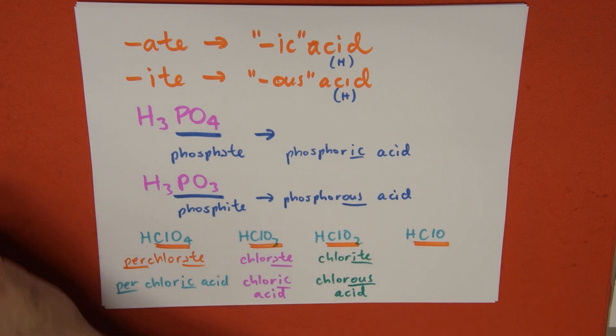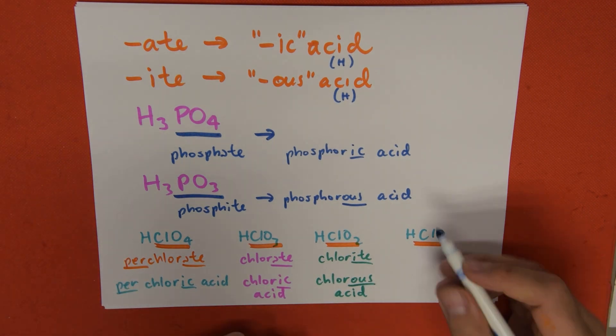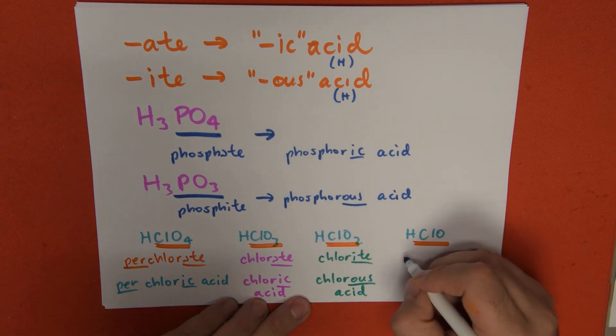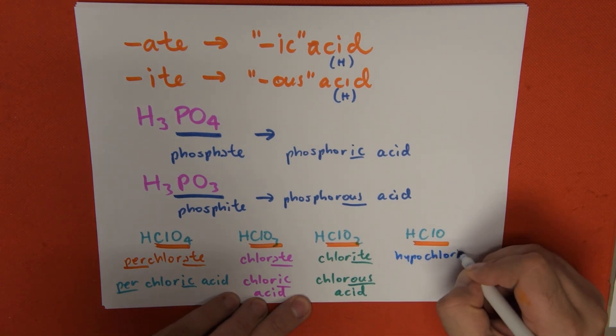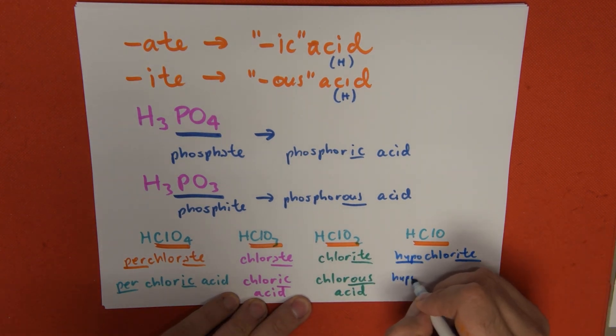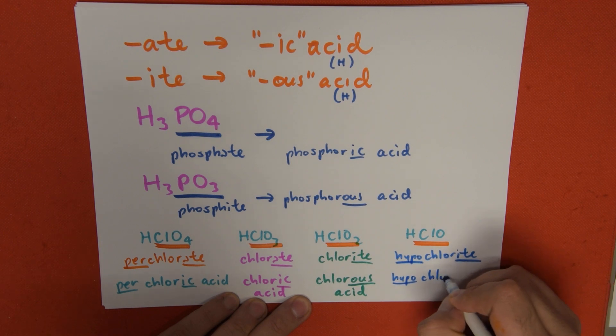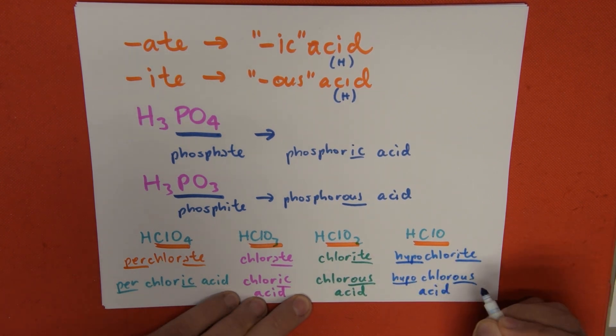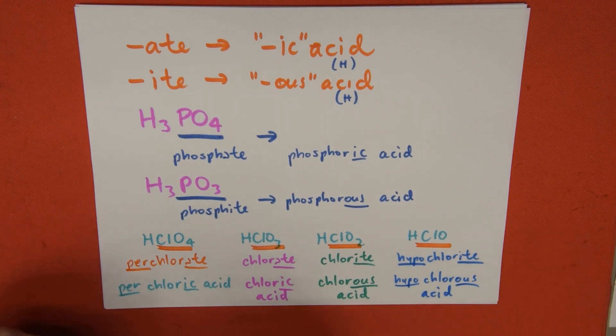Same thing for the last one, ClO. We find it on our table, and we find out that its name is hypochlorite. We keep the hypo- prefix, so we're going to write hypochlorous acid. That's basically it.